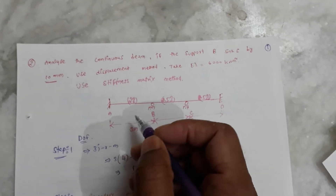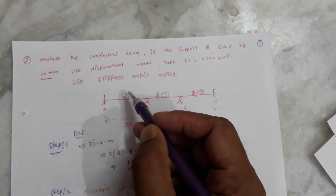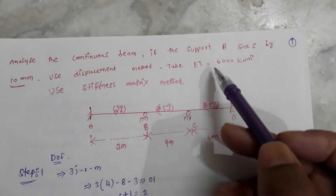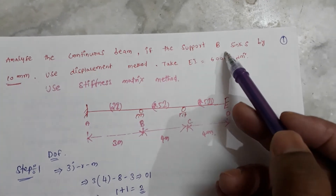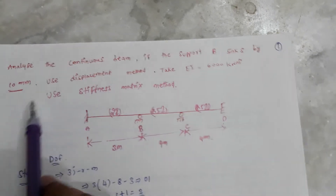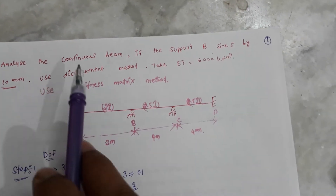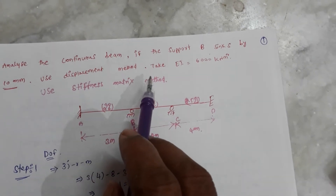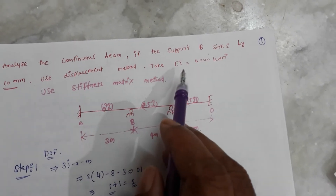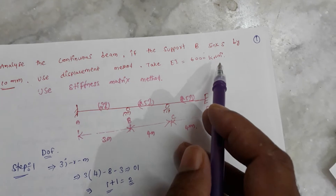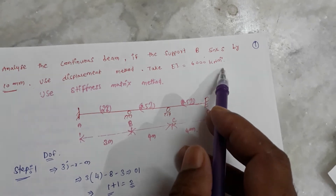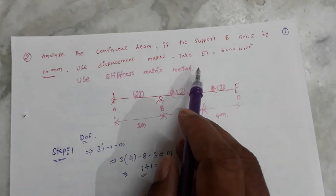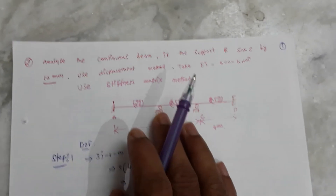Today we will discuss the analysis of a continuous beam if support B sinks by 10 mm. We will use the displacement method — specifically the stiffness matrix method — with EI equal to 6000 kilonewton per meter squared.